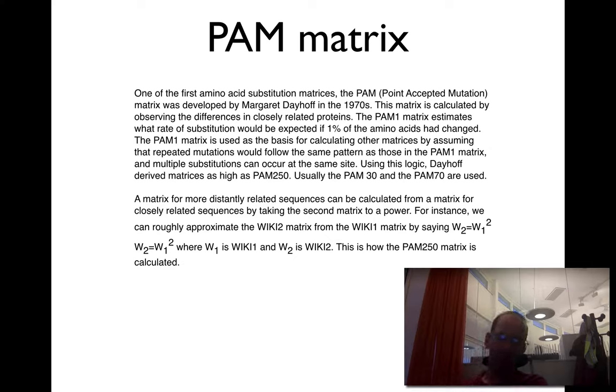You can assume that PAM1, if there are two sequences that have a distance of PAM1, so they have one mutation out of 100 amino acids, they're quite easy to align, because 99% of the amino acids are identical, so basically the alignment is trivial. And then the idea is that you can actually calculate a PAM2 matrix from a PAM1 matrix by just multiplying the probabilities. You can basically take the PAM1 matrix and PAM2 matrix, etc., and you can go on and calculate higher number matrices.